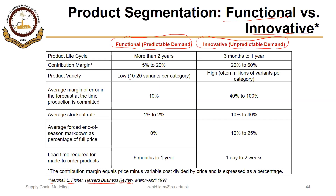He differentiated between these two types of products based on several features. Product life cycle is one: functional products have a longer life cycle — more than two years — compared to three months to one year for innovative products. Contribution margin is low for functional products but high for innovative ones. Forecast error is low for functional products but high for innovative products.